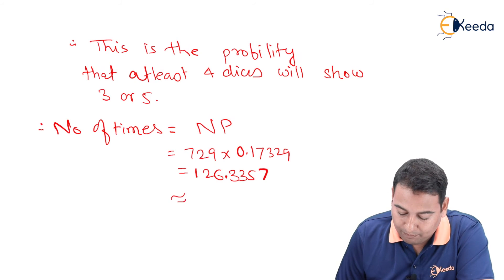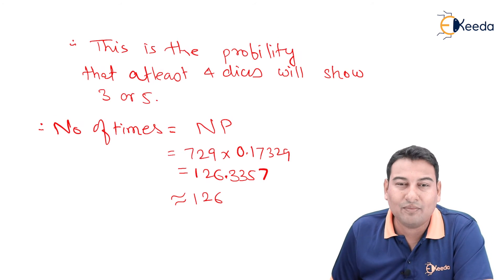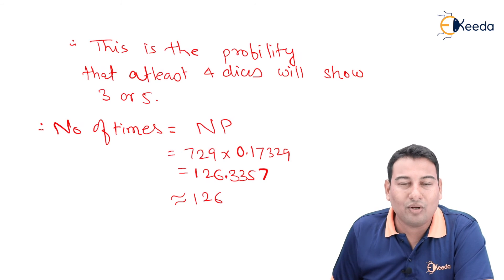126.3357, which is approximately equal to 126. So this is the number of times at least four dice will show three or five. Remember, whenever capital N is given, you need to multiply by the probability. Hope you understood. Thank you.